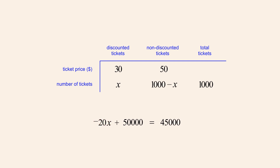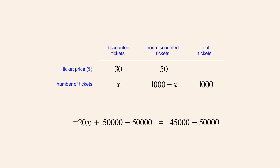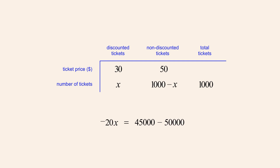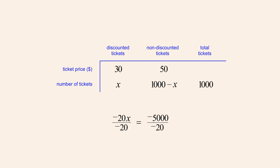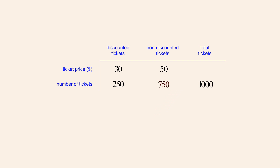Subtracting 50,000 from both sides of the equation allows us to cancel the positive and negative 50,000, leaving the negative 20x term alone on the left. Completing the arithmetic on the right, we subtract 45,000 minus 50,000 to get negative 5,000. We then divide both sides by negative 20, canceling the negative 20s, and dividing negative 5,000 by negative 20 we get x equals 250. So 250 discounted tickets can be sold, and 1,000 minus 250, or 750 non-discounted tickets can be sold.